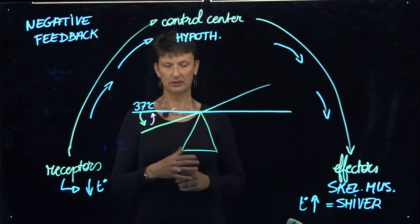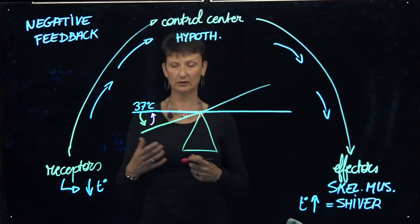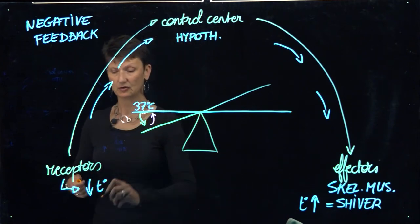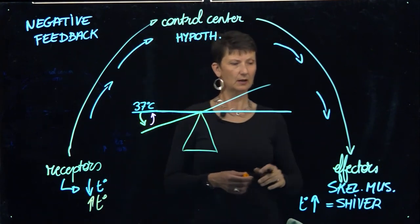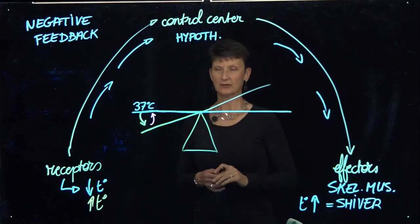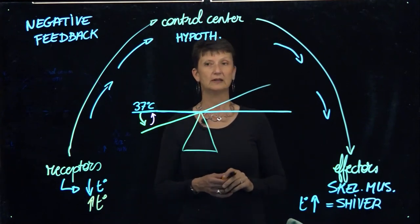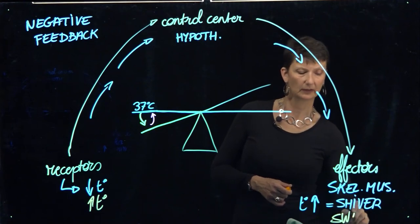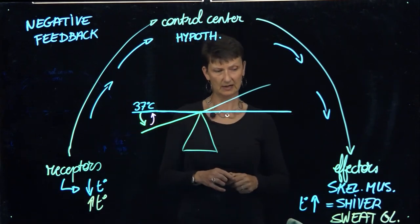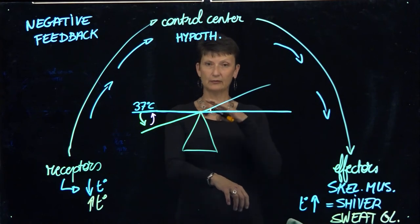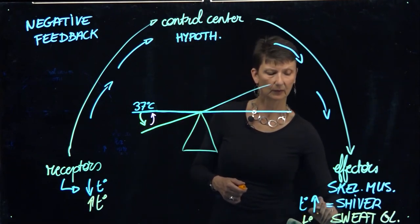We can also look at the totally opposite example: let's say we're in a hot room and our body temperature begins to rise. Via the afferent pathway, parts of the brain are going to respond. This time we're not going to shiver, but our sweat glands are going to be stimulated so that we sweat. Sweat functions like an evaporative cooler — sweat evaporates from your body and as it does, it takes away heat, consequently bringing down our body temperature.